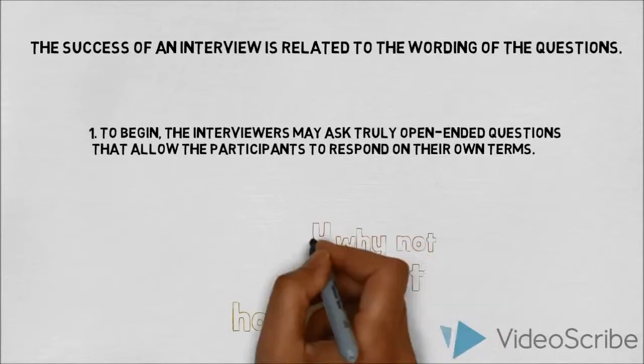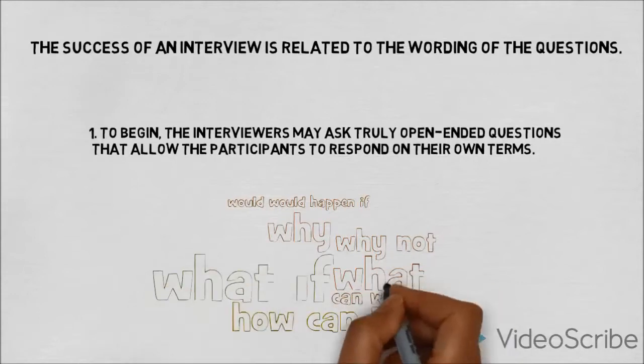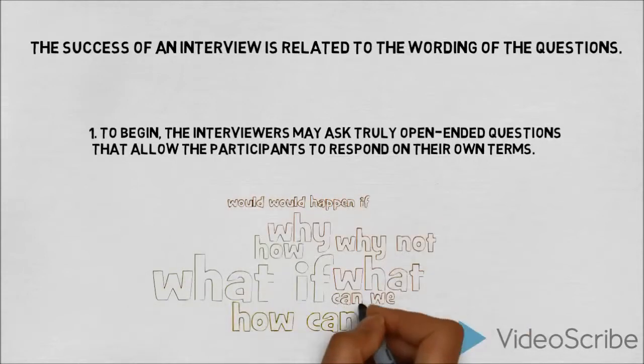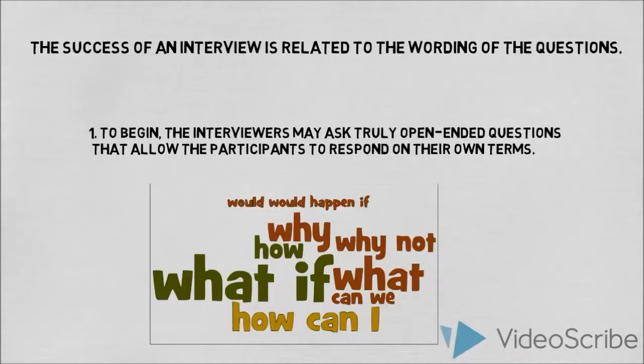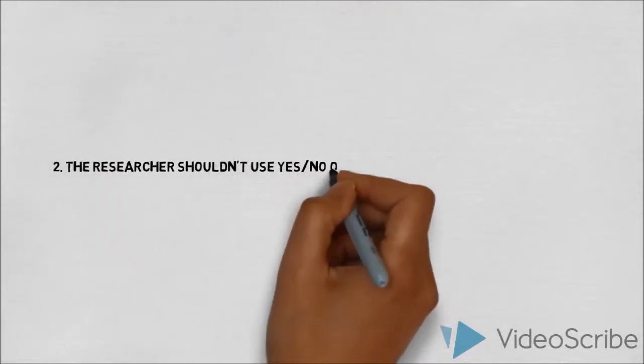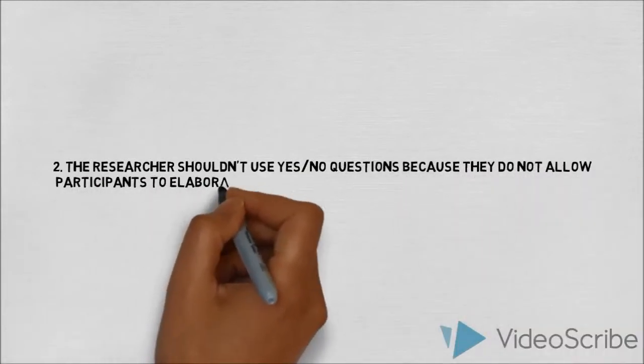if a teacher is asked, how satisfied are you with this textbook, the response will be phrased in terms of satisfaction. However, if the question is phrased as, what do you think of the textbook, the teacher can discuss any aspect of the book that he or she believes is important. The researcher shouldn't use yes-no questions because they do not allow participants to elaborate on their response.